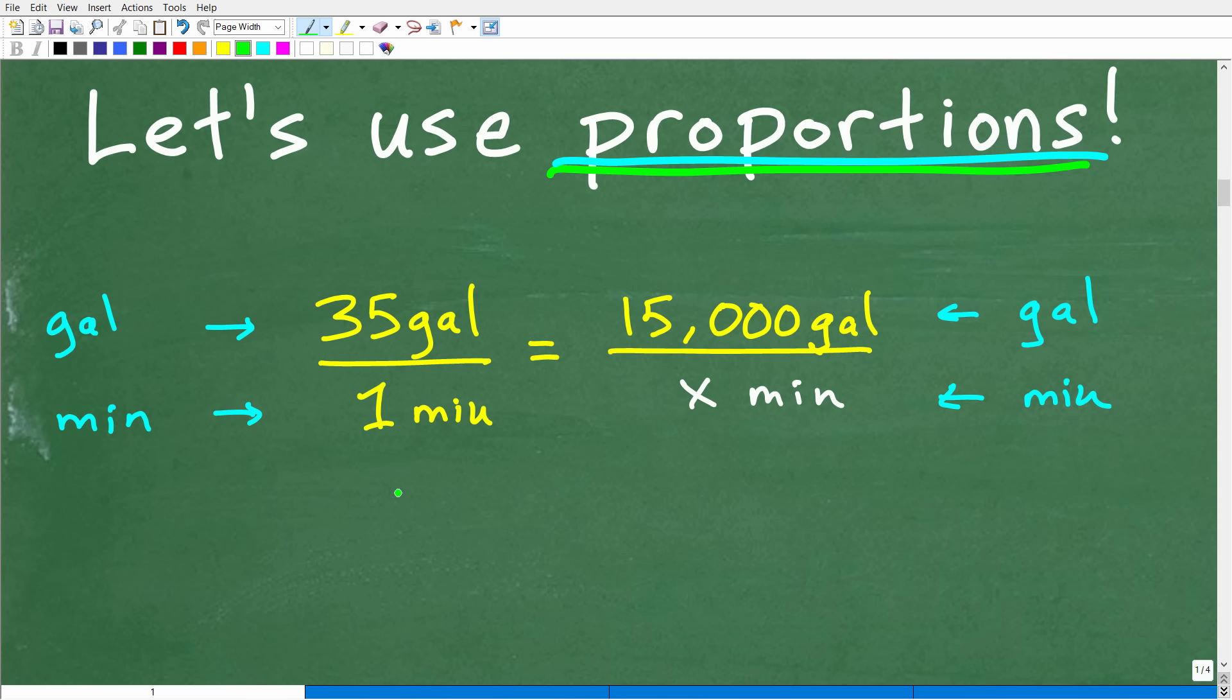So when you have a proportion, the cross product is always true. And we're going to be using the cross product to solve this problem. But let's get back to our actual information here. So we have this rate. Okay. So again, we have the rate of the pump, but we can set up another rate here. Okay. So we have a rate equal to a rate or a fraction equal to a fraction. In other words, this is a proportion. So let's see how we set this up.